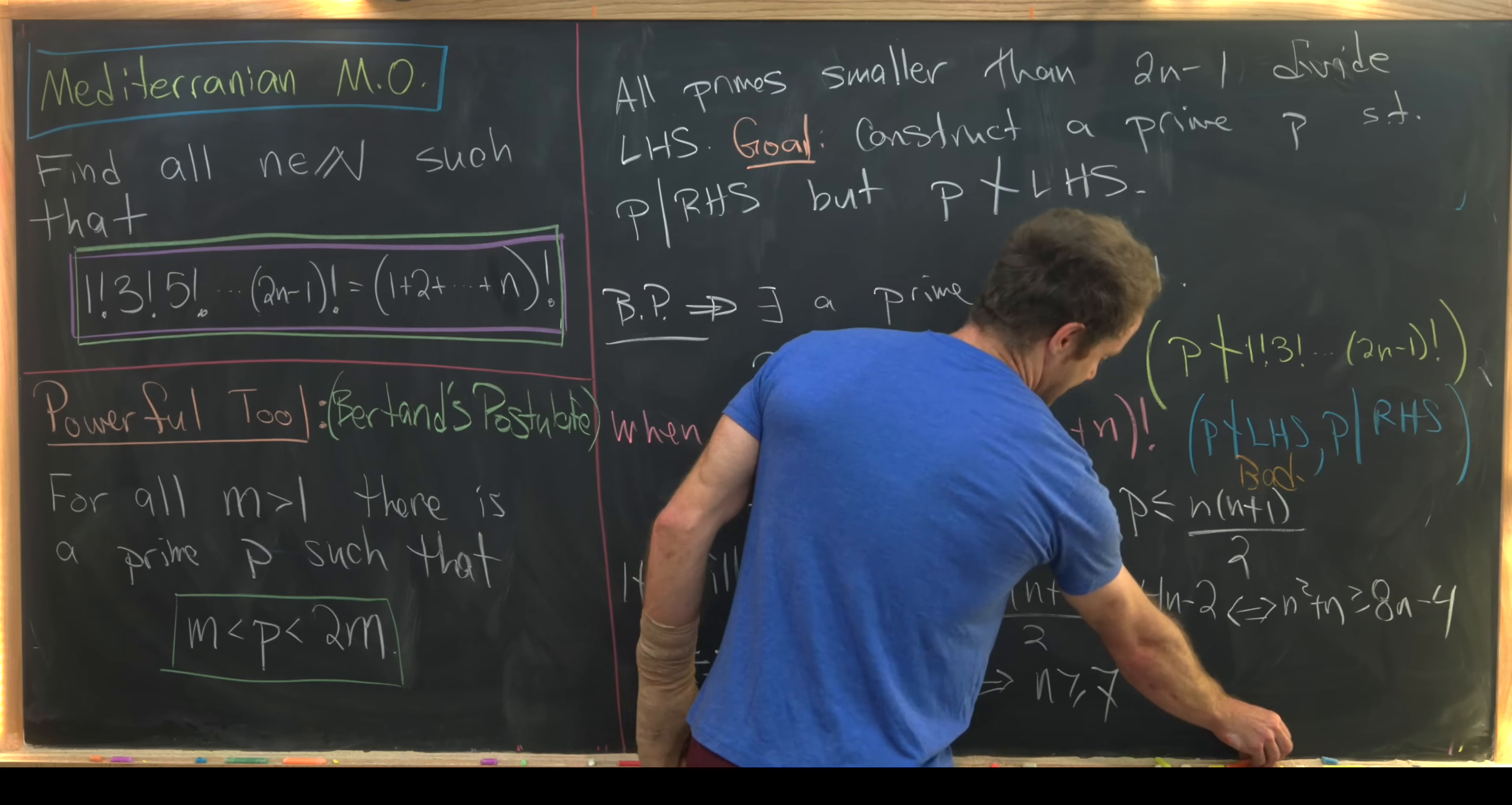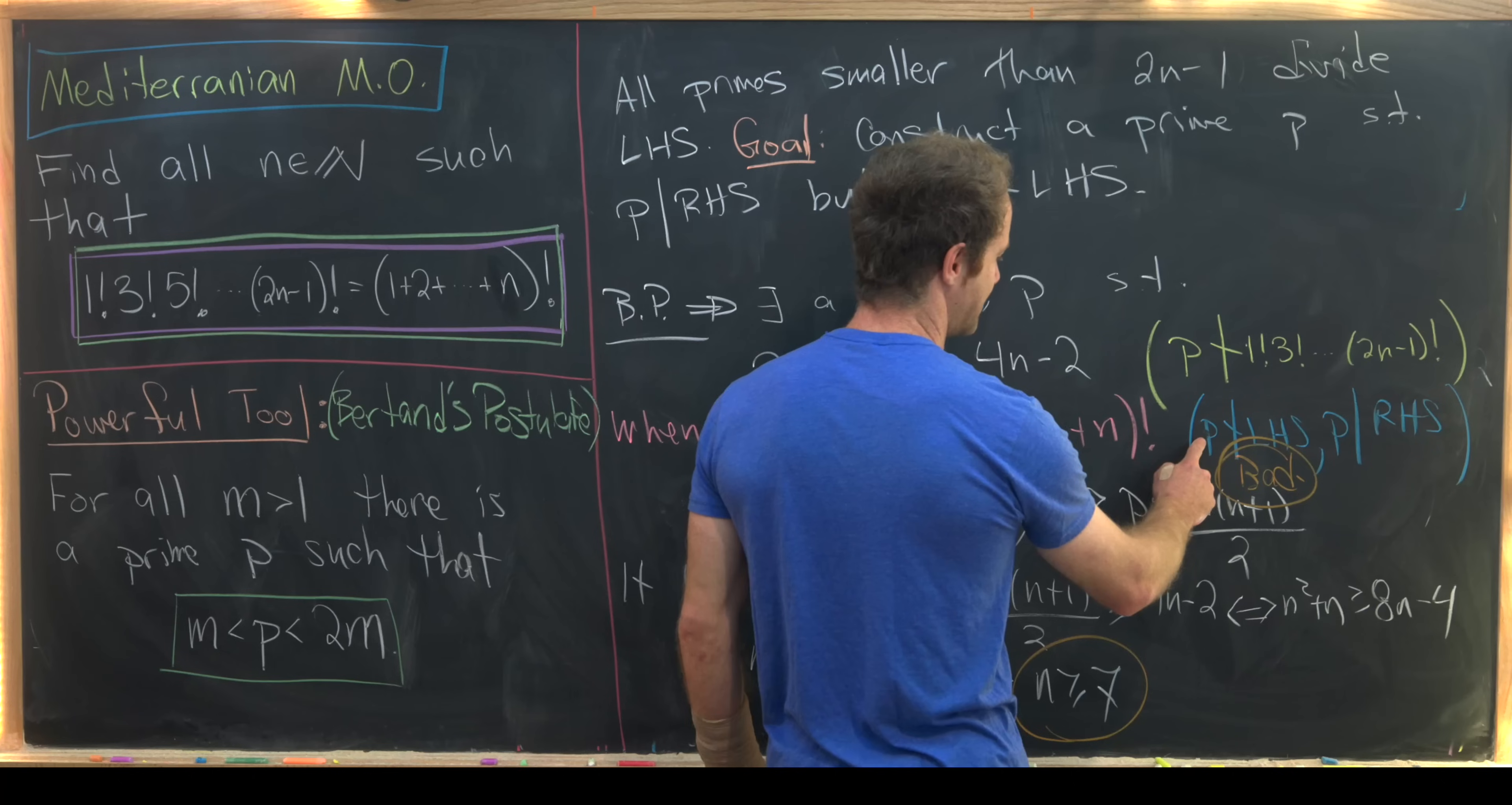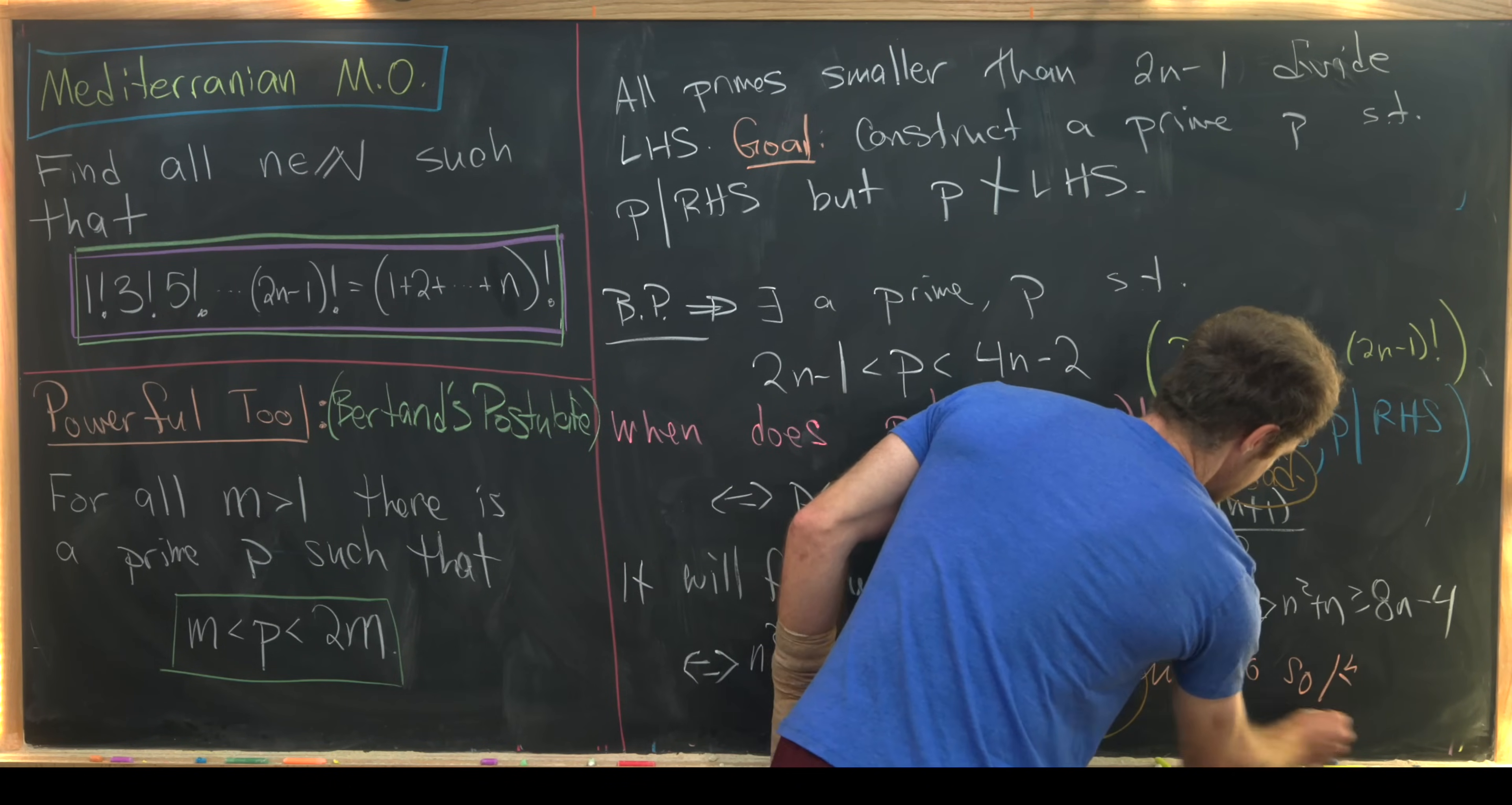But let's recall that this n bigger than or equal to 7 was in fact our bad condition. What do I mean by that? Well, this n bigger than or equal to 7 implied the prime did not divide the left-hand side but it did divide the right-hand side, which gave an impossibility. So in other words, in this n bigger than or equal to 7 case, there is no solution.